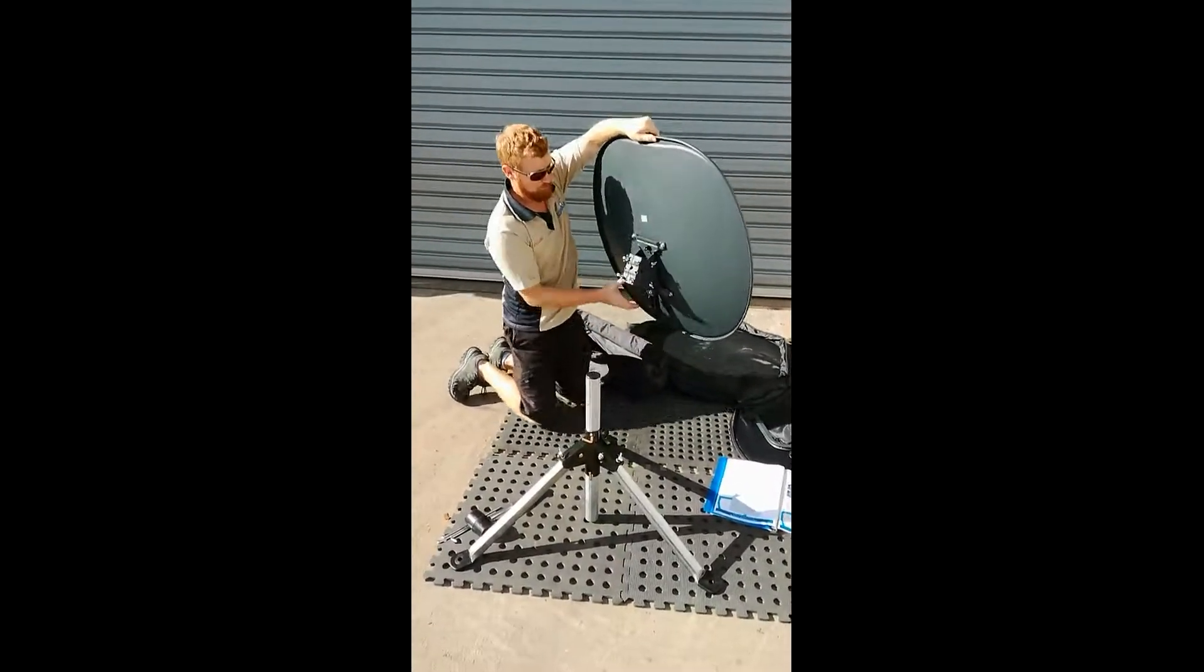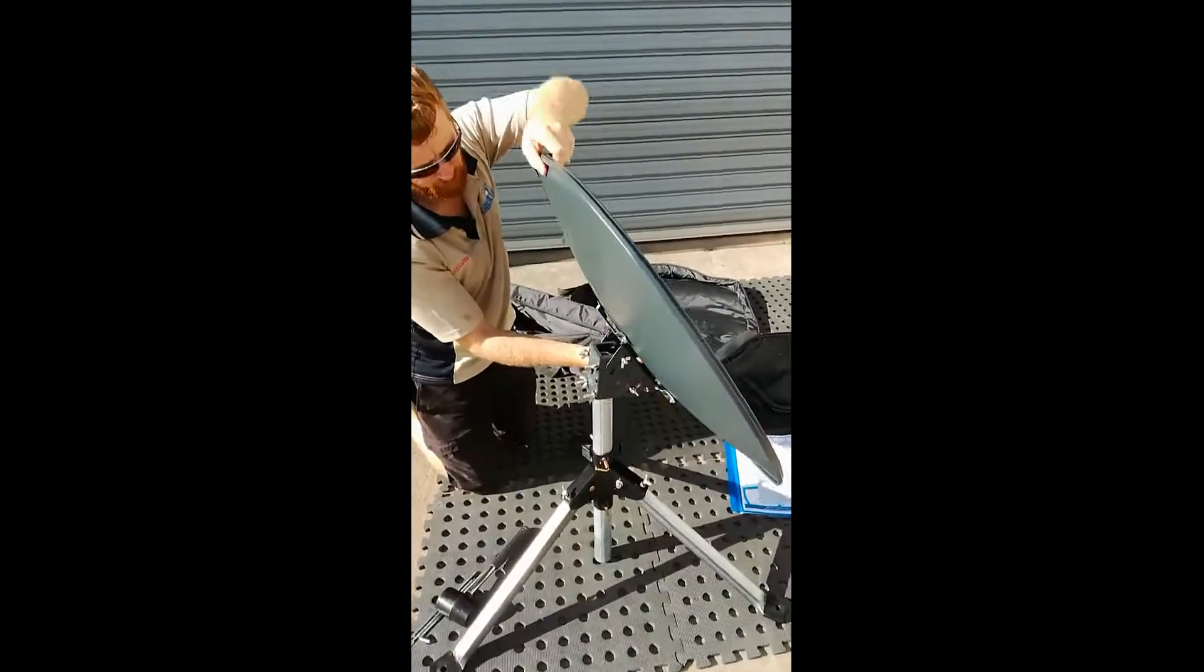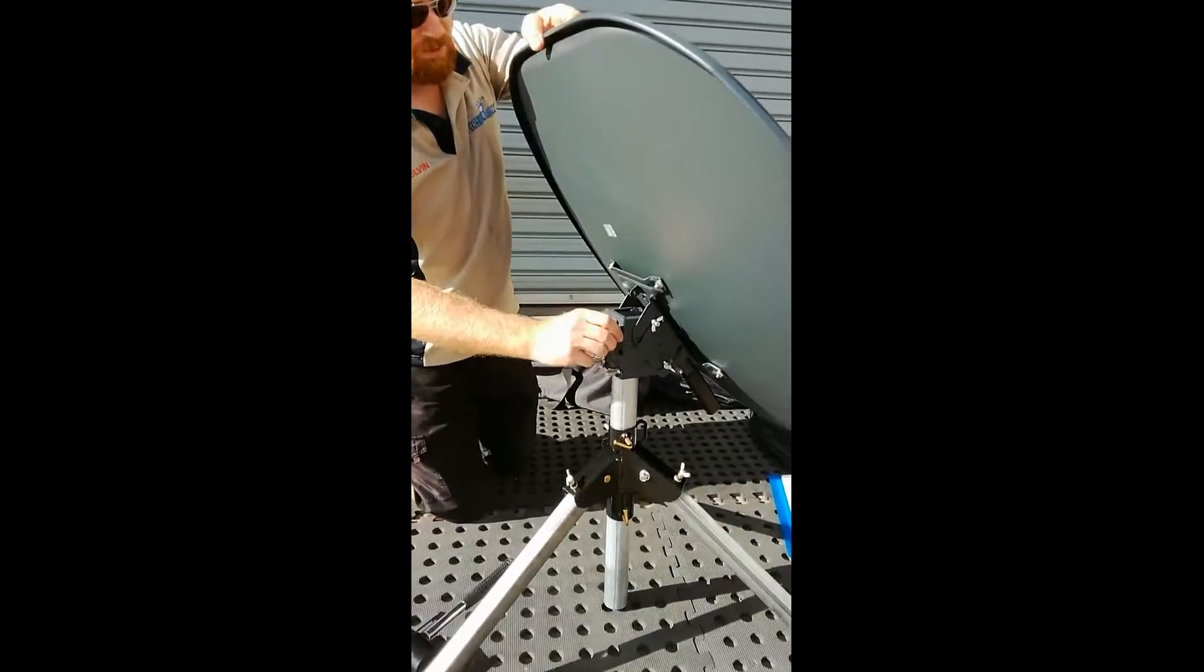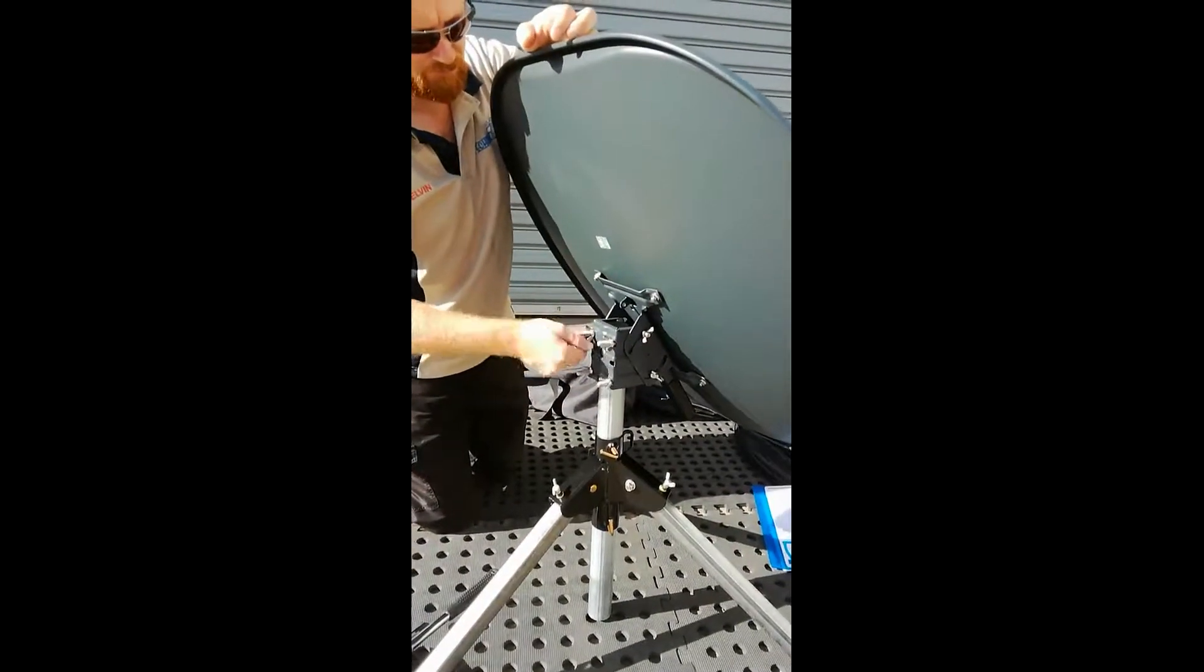Then we'll slide the dish on the pole and then do the wing nuts up secure enough just to rotate it.